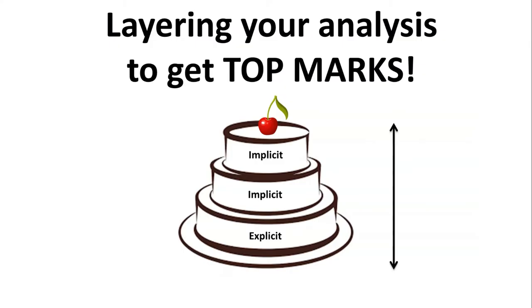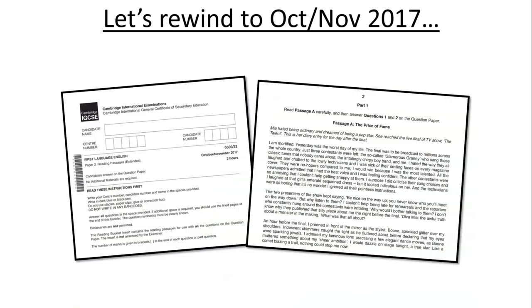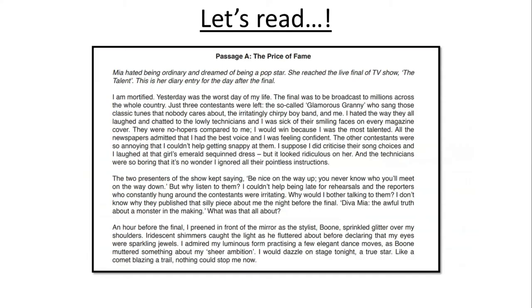So let's take a look at how to layer your analysis successfully, especially if you are aiming for band 5, at least 13 out of 15. Let's revisit some key terms: explicit and implicit. Explicit essentially means what the words within your image mean within the given context. Implicit refers to the suggested meaning — and that is your analysis. You always want to try and layer your analysis and look at those different shades of meaning. Now we're going to be rewinding to October/November 2017. I absolutely love this paper. The narrative is called The Price of Fame, and I will link this in the description box below if you want to have a go at this question.